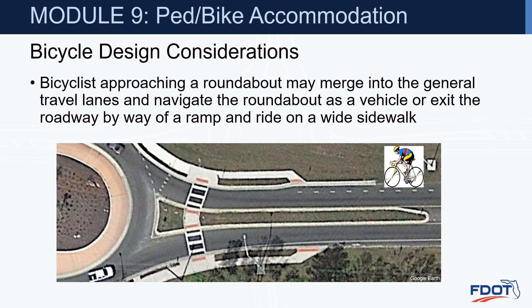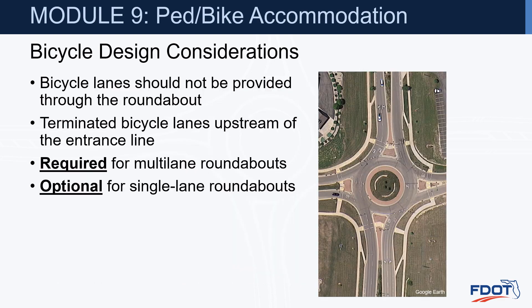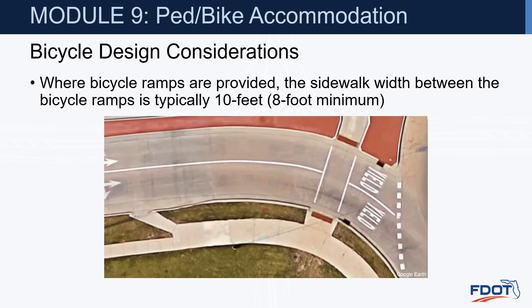Bicycle design considerations. A bicyclist approaching a roundabout may merge into the general travel lanes and navigate the roundabout as a vehicle, or exit the roadway by way of a ramp and ride on a wide sidewalk. Bicycle lanes should not be provided through the roundabout — they should be terminated upstream of the entrance line. Bicycle ramps are required for multi-lane designs but optional for single-lane roundabouts. Where bicycle ramps are provided, the sidewalk width between those ramps is typically 10 feet with an 8-foot minimum.